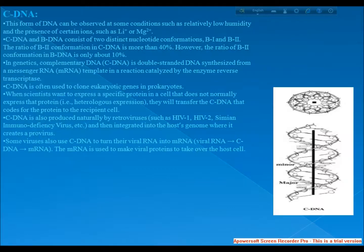Next, I come to C-DNA. This form of DNA can be observed at some conditions such as relatively low humidity and the presence of certain ions such as lithium plus or magnesium 2 plus. C-DNA and B-DNA consist of two distinct nucleotide conformations, B1 and B2. The ratio of B2 conformation in C-DNA is more than 40%; however, the ratio of B2 conformation in B-DNA is only about 10%. In genetics, complementary DNA, cDNA, is double-stranded DNA synthesized from a messenger RNA template.